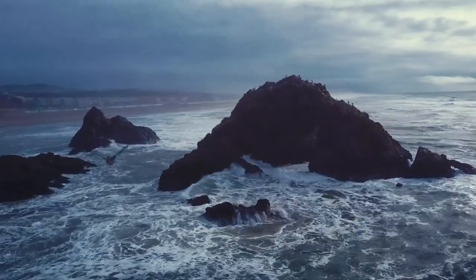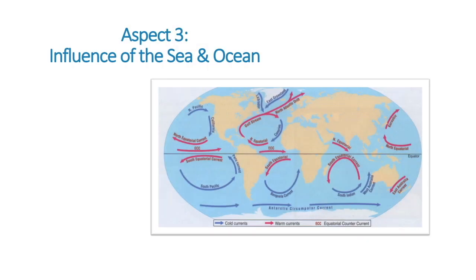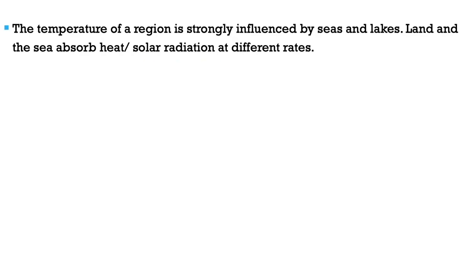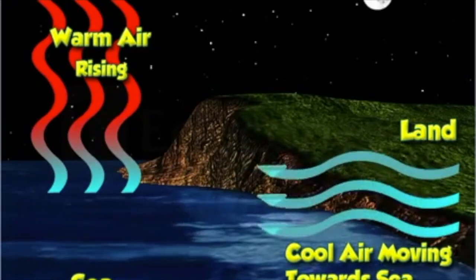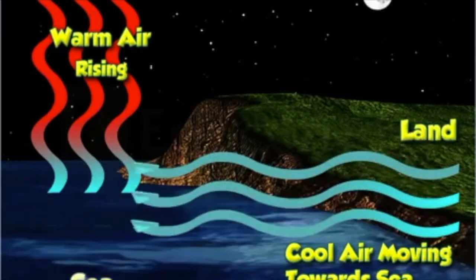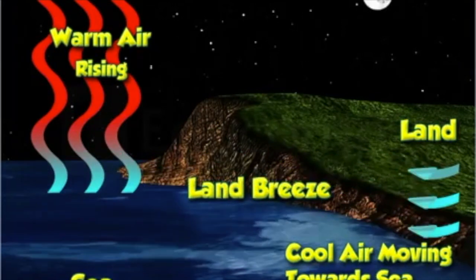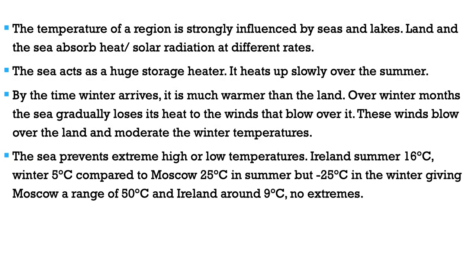The third aspect is how the seas and oceans influence solar energy. The sea has a very important influence on the distribution of solar energy around the globe, and the temperatures of a region are strongly influenced by large bodies of water. Land and sea absorb heat at different rates. The sea acts like a huge storage heater — it heats up slowly over summer and by the time winter arrives it is much warmer than the land. Over winter months the sea gradually loses heat to the wind that blows over it, and these winds moderate winter temperatures, preventing extreme highs or lows.